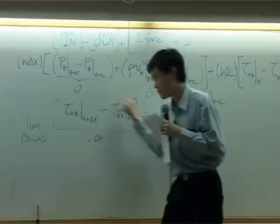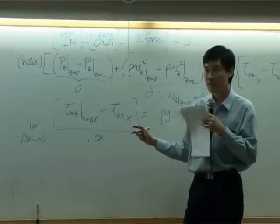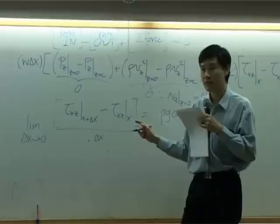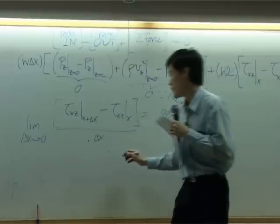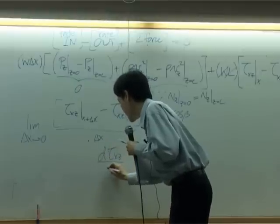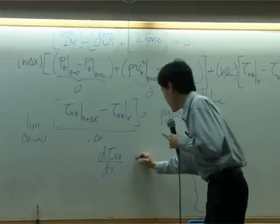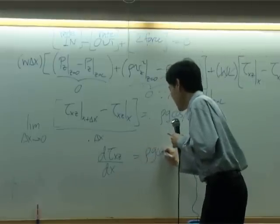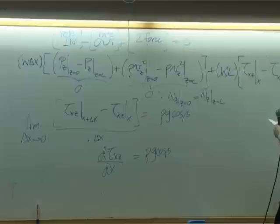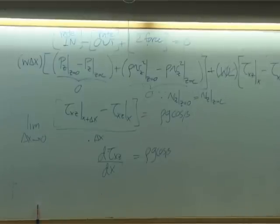And by definition, what is this term? Differentiation. Right? Differentiation of what? So it's turned to be d of tau xz by dx equal to rho G cosine beta.